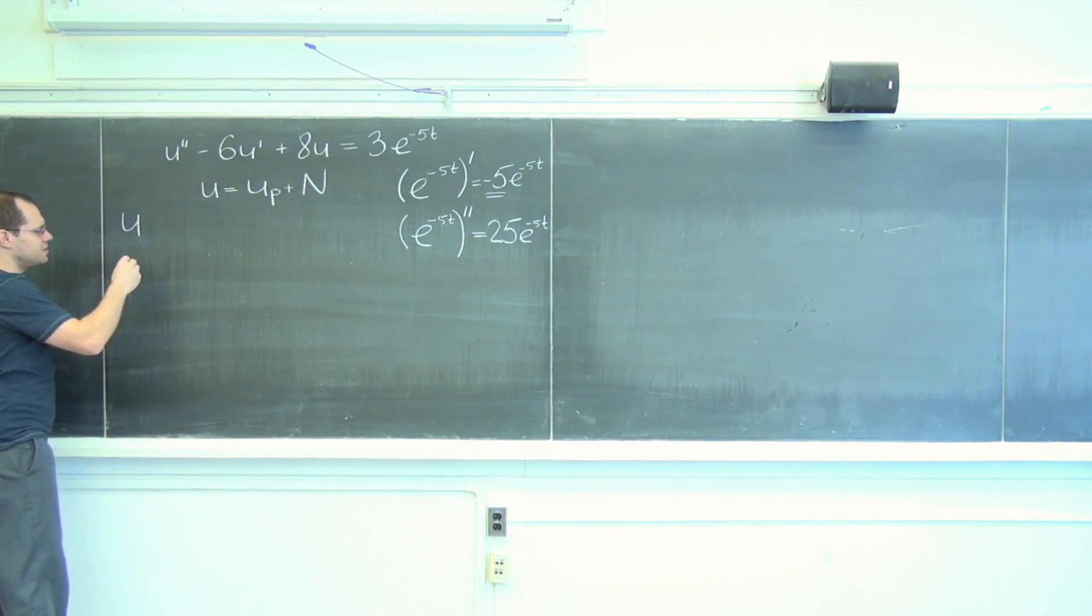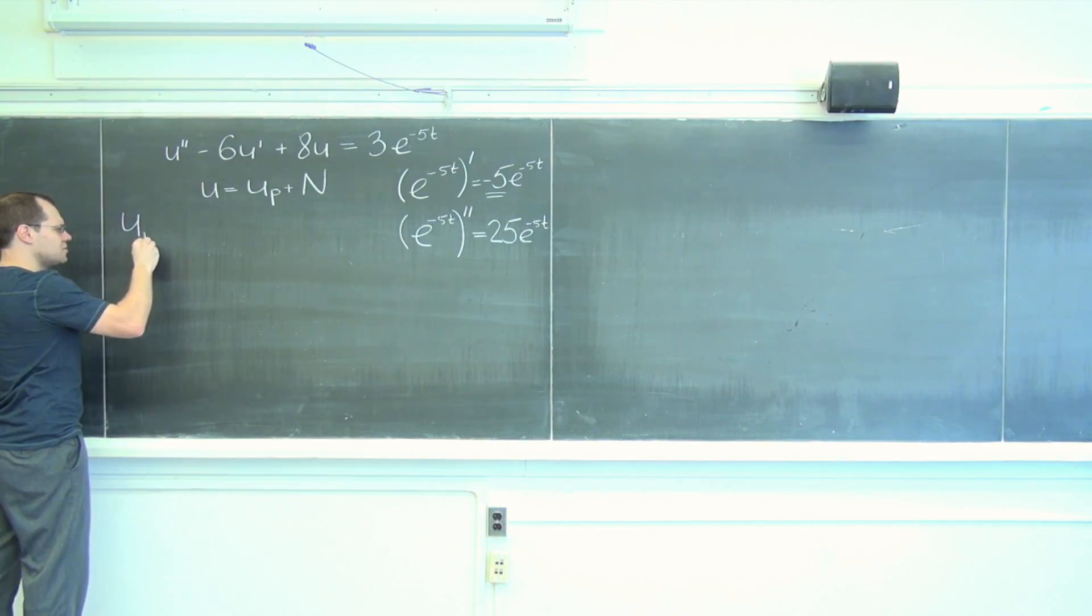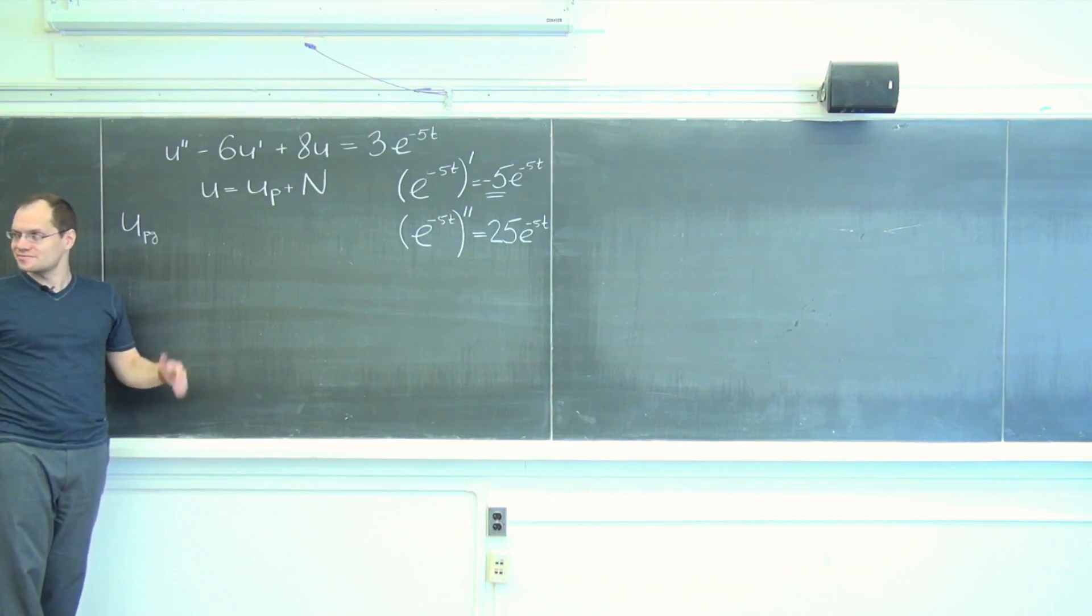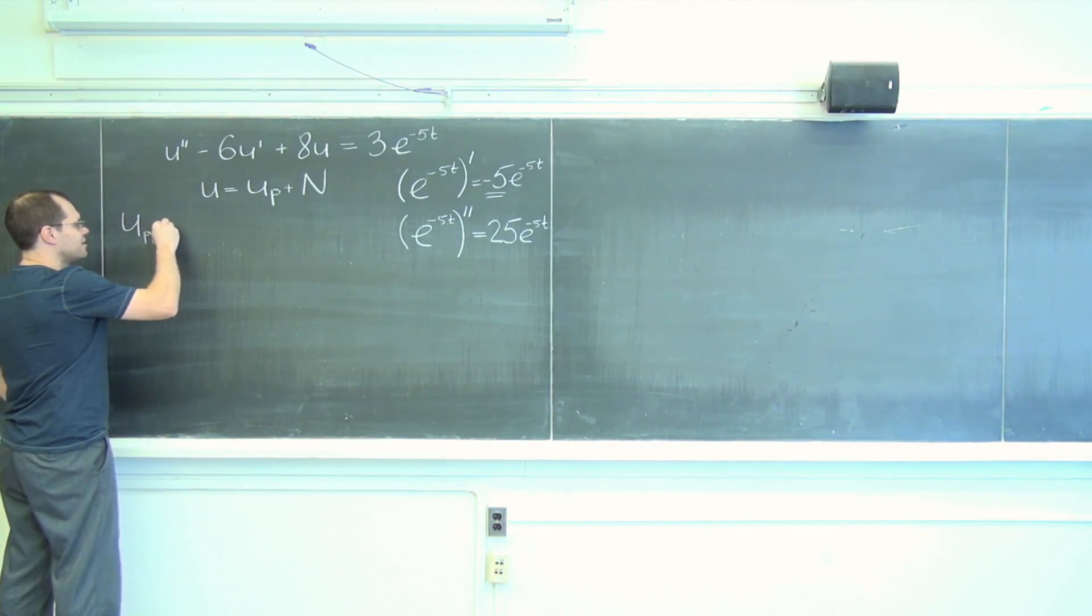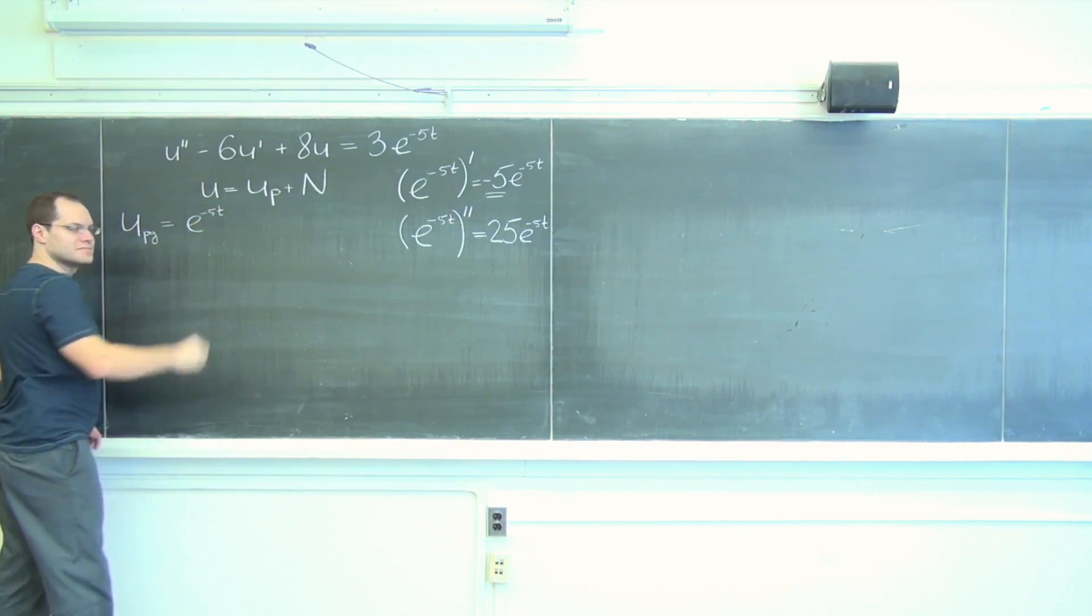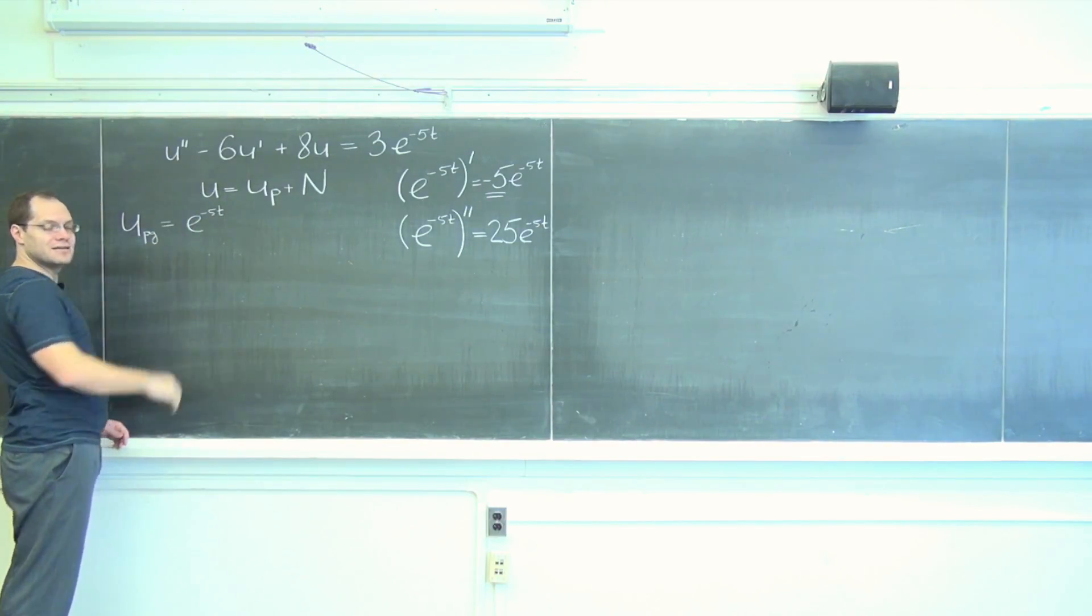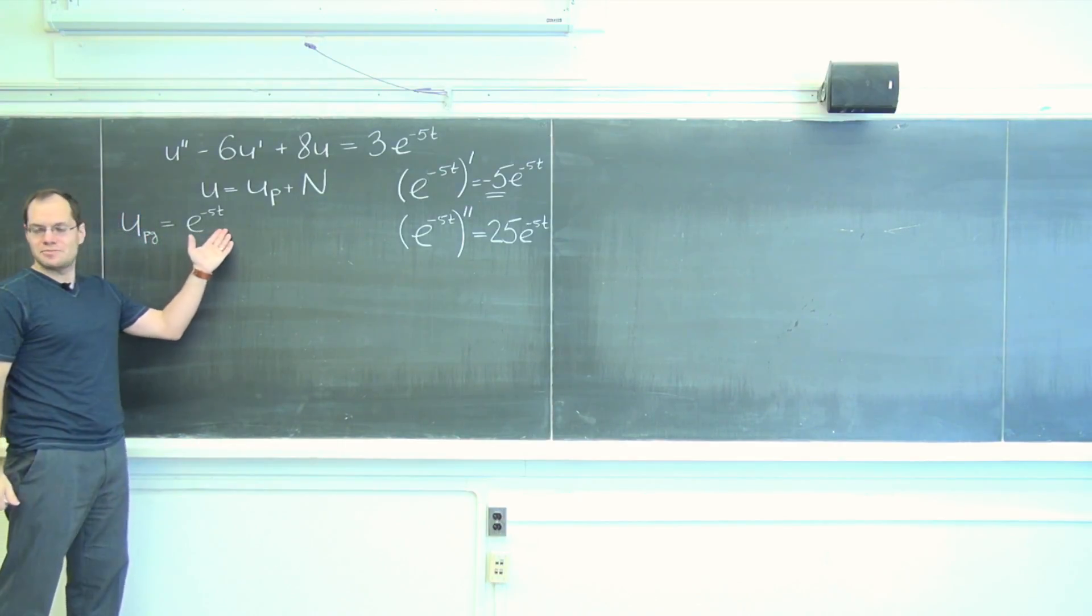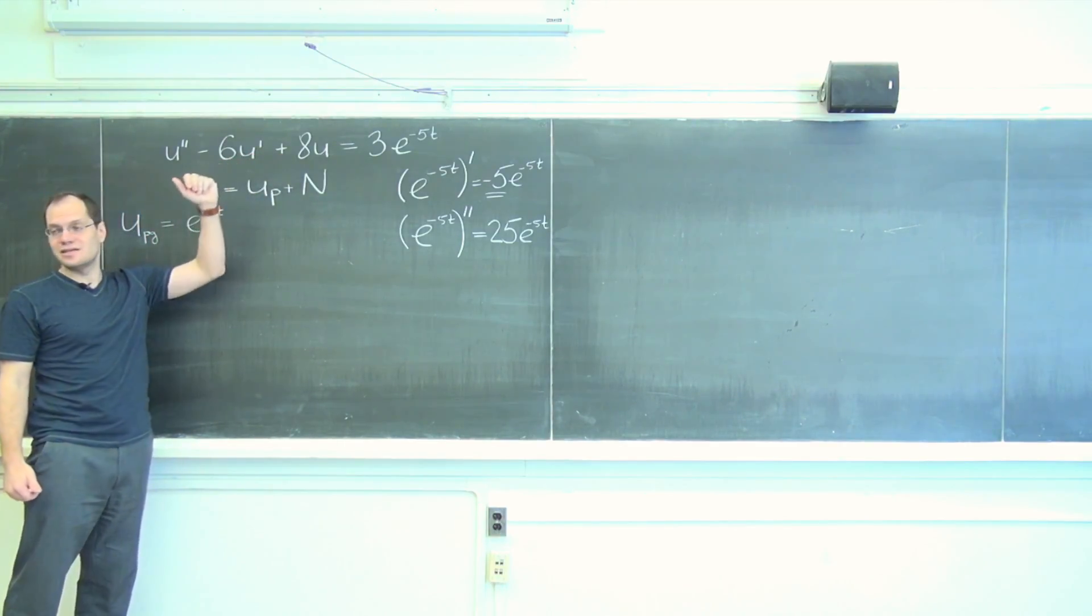So here's our guess. Should I write sub P? u sub PG. Not my initials—particular guess. Okay, equals—well, that's our guess, e to the minus five T. And then I'm going to plug it in. Why don't you do it along with me? What happens when you plug in e to the minus five T into this operator?